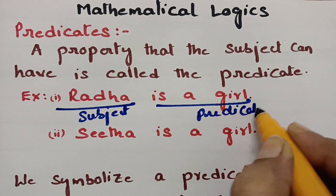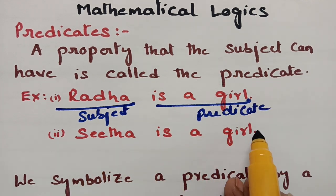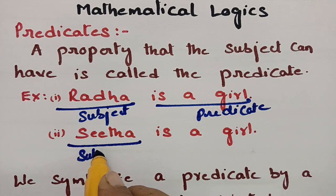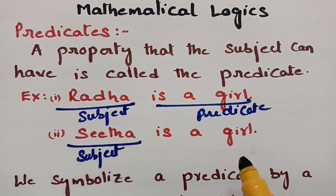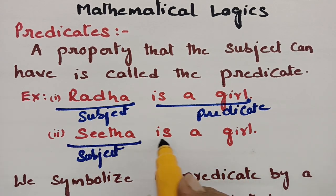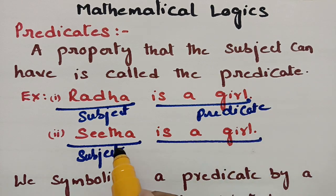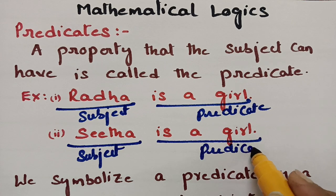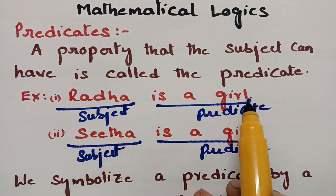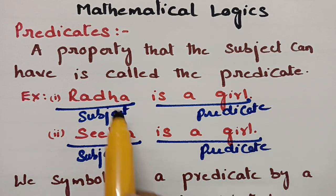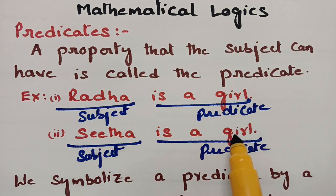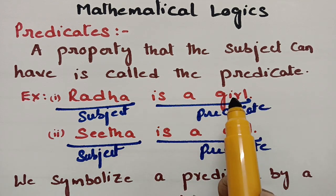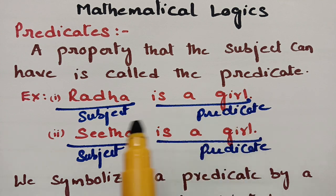Similarly, 'Sita is a girl' — Sita is the subject (names are always the subjects), and 'is a girl' is the property of the subject, which is the predicate. So Radha and Sita are subjects, and 'is a girl' is the predicate.